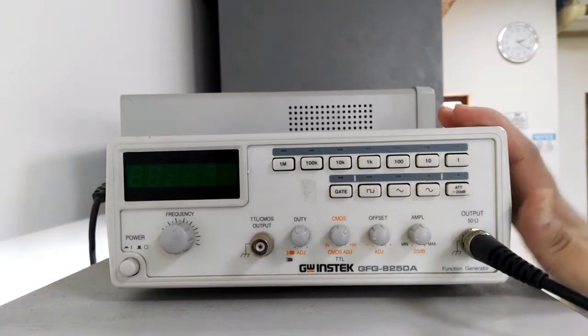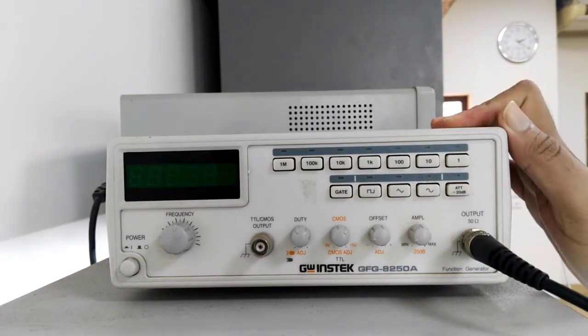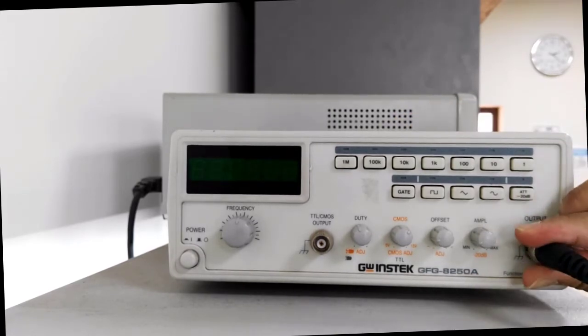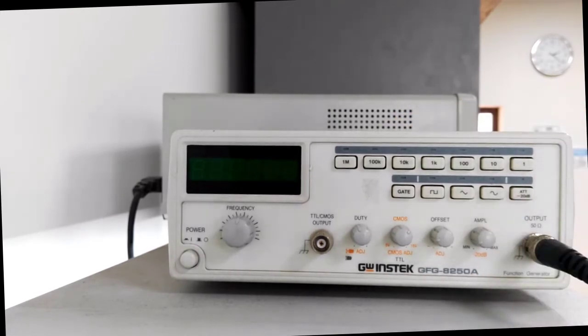This model is manufactured by GW Instek and this is the model GFG-8250A. This function generator is capable of producing frequencies up to 5 megahertz and it will supply the highest amplitude of 24 volts peak-to-peak.